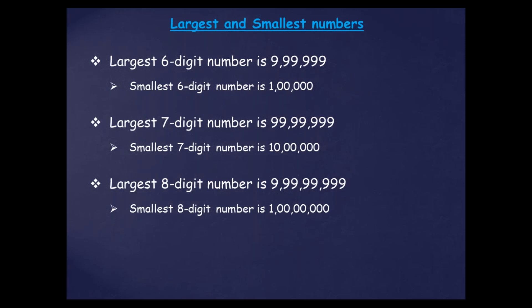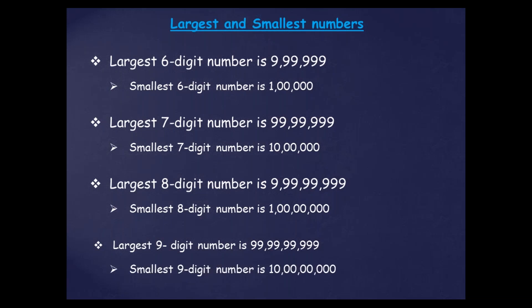If you count all the digits you will find there are altogether eight digits — with one, seven zeros are given. Next is the largest nine-digit number: 99,99,99,999. Altogether there are nine digits, so this is the largest nine-digit number. Then the smallest nine-digit number is 10 crore. With one, eight zeros are given, altogether there are nine digits, so this is the smallest nine-digit number.